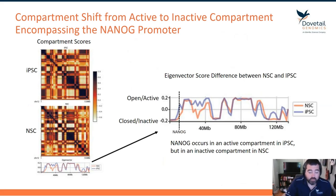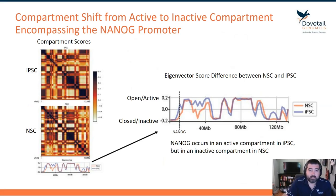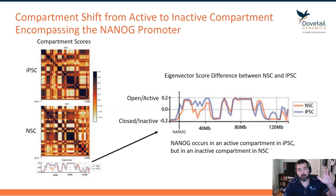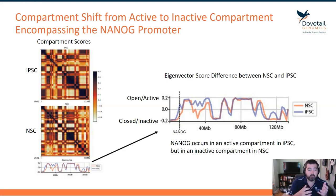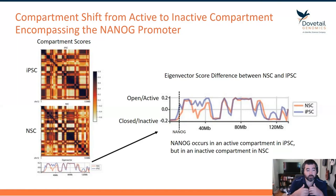If you remember back to our introduction to conformation, there is open chromatin — usually an A compartment — or inactive, silent chromatin — normally a B compartment. What I have plotted on the left are the A/B compartment scores, showing the open-closed scoring of the iPSC and NSC across chromosome 12.